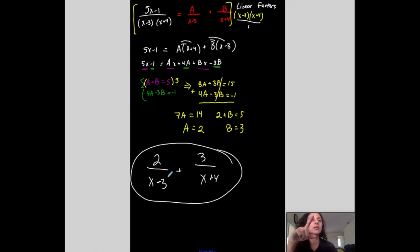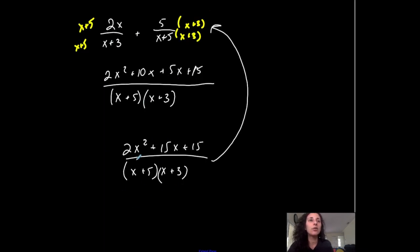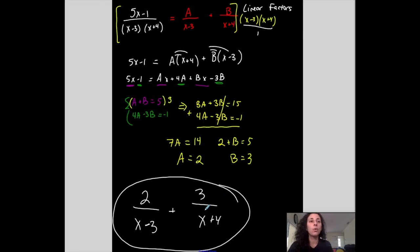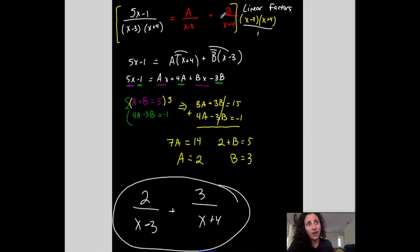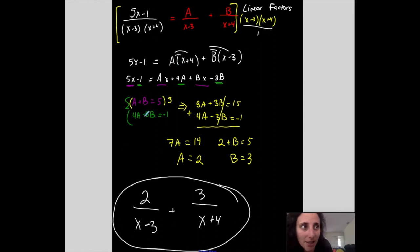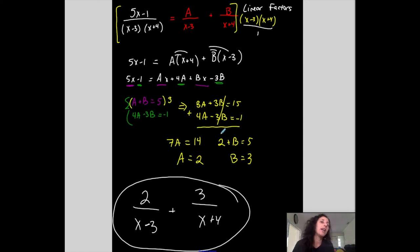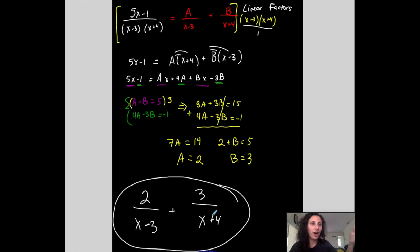You can always check the result by combining those fractions back together — you should get the original single fraction. To do partial fraction decomposition, you need to know how to factor, how to identify linear factors, how to solve a rational equation, and how to solve a system of equations — which could be 2, 3, or 4 variables depending on the problem. The end result is a sum or difference of separate fractions that recombine back into the original. That's what partial fraction decomposition is all about.